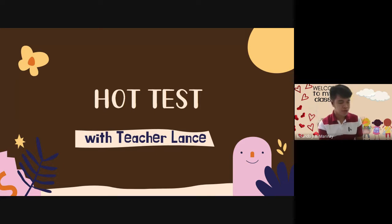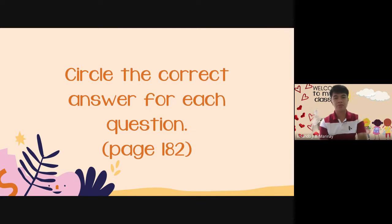Okay, so what are we going to do? We are going to answer some questions. We're going to circle the correct answer for each question. And remember, don't say the answer, okay? Just circle it on your book. You don't have to say the answer because your classmates will know. Let's go. Let's start.